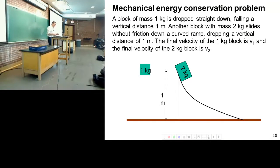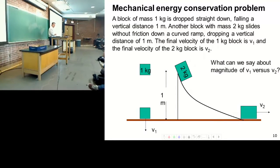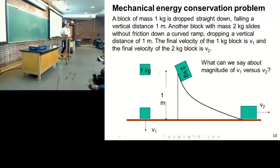The final velocity of block one is V1. Final velocity of block two is V2. Where's my problem here? So find, there they are. The question is what can we say about the magnitude of V1 and V2?